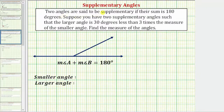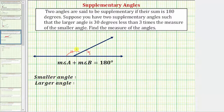Two angles are said to be supplementary if their sum is 180 degrees. Looking at the diagram below, this angle and this angle are supplementary because the sum of their measures equals 180 degrees. This also means if we put the two angles together, they would form a straight angle.